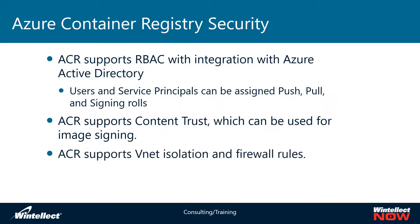ACR also supports VNet isolation and firewall rules. With VNet isolation you can enable a VNet endpoint that allows anything on a virtual network inside Azure to access the Azure Container Registry. With firewall rules you can lock down which IP addresses from the public internet can access your Azure Container Registry.